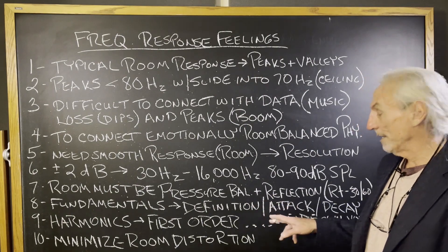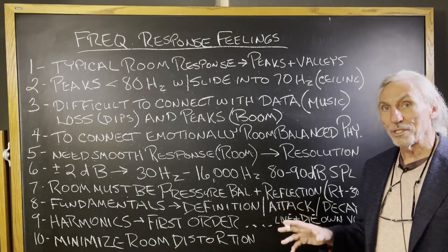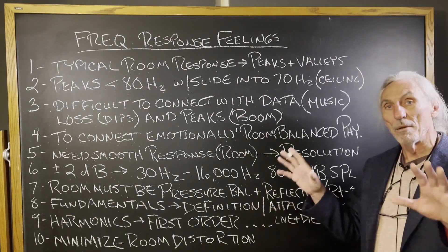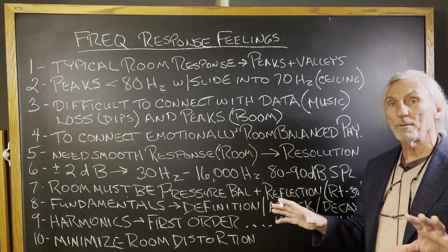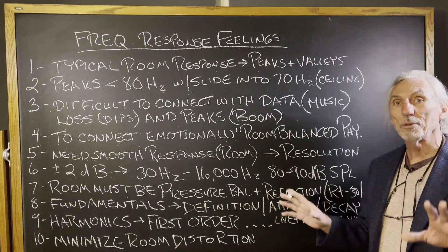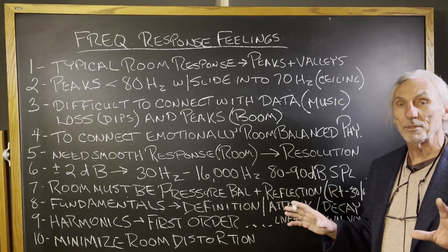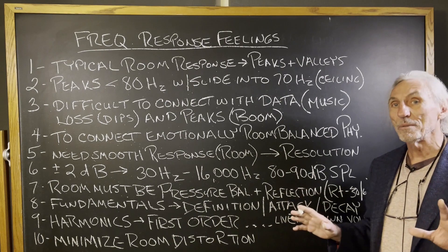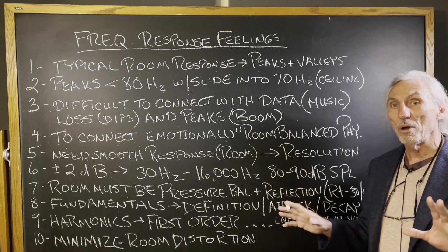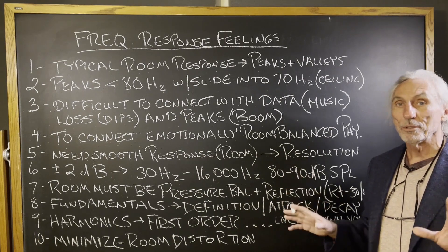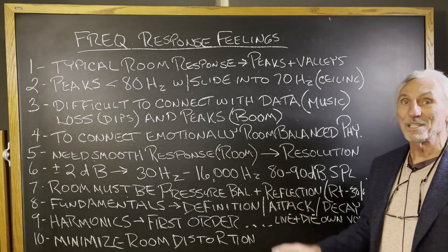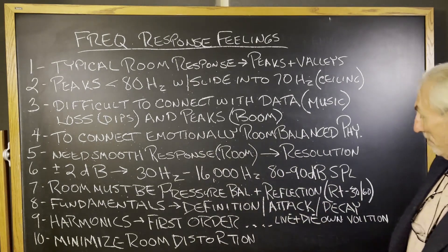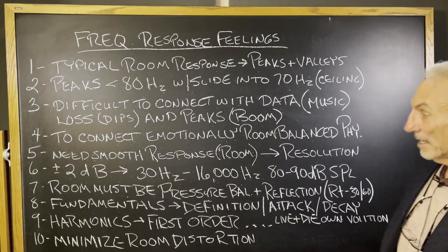The room must be pressure balanced. We have two issues in a room: pressure, low frequency, and reflections. Both of those have to be balanced. Both take separate technologies, different treatments on each wall — different everything. So it all has to be calculated.